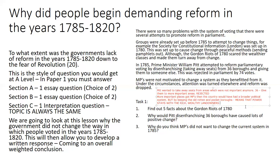For the first task: first, research the Gordon Riots and find five facts about them. Second, why would Pitt disenfranchising 36 boroughs have caused lots of positive change? Remember, it didn't happen — but think about what would have happened if it was passed. Number three: why do you think MPs didn't want to change the current system in 1785? Try to think of three reasons and explain them. Pause the video here so you can really develop understanding of the context before we look at more detail.